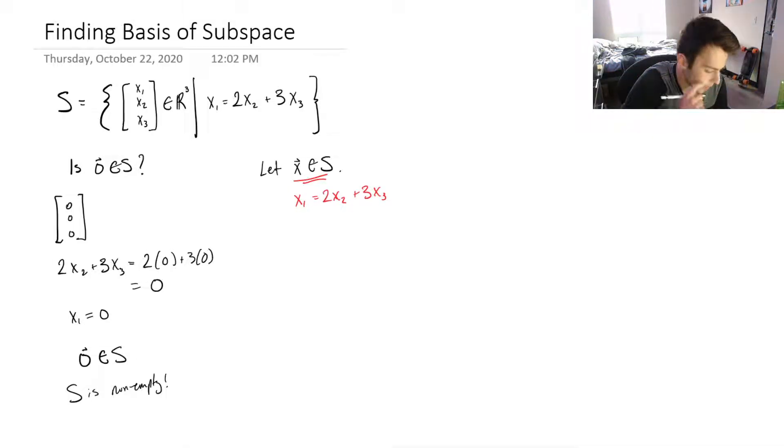That's what we're implying when we say x is in S. So let's let C be some constant. Okay, so what we're checking here is Cx in S. So Cx I know would be equal to Cx1, Cx2, Cx3. Those are my components.